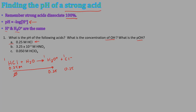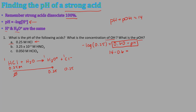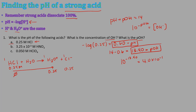To find the pH, take the negative log of 0.25, which gives a pH of 0.60. Then, since pH + pOH = 14, the pOH is 14 − 0.60 = 13.40. To get [OH⁻], use 10^(−pOH): 10^(−13.40) = 4.0 × 10⁻¹⁴ M.